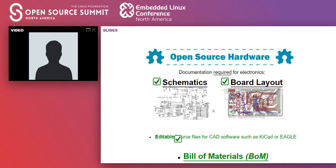I mostly work with electronics. For open source hardware in electronics, we'd be talking about the schematics, the board layout, and the original CAD files — the editable source files. I use KiCad, for example, though it doesn't have to be an open source tool; it could be something like Altium. And then also the bill of materials. These are the files you'd be sharing for open source hardware.